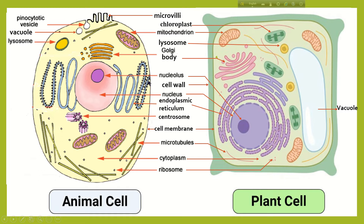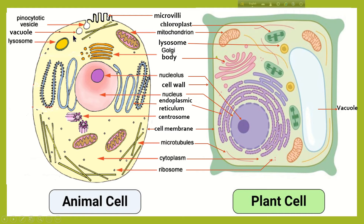Here we can see some differences between plant cell and animal cell. The main difference is the presence of chloroplast. Cell wall is present in plant cell but absent in animal cell. Centrosome is present in animal cell but absent in plant cell. Microvilli and pinocytotic vesicles are present in animal cell but absent in plant cell. A large vacuole is present in plant cell, but only a small vacuole is present in animal cell.